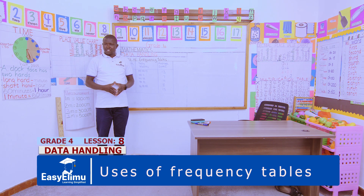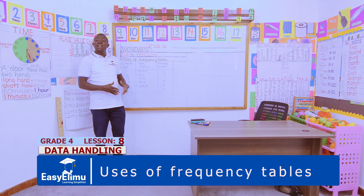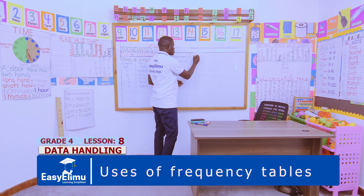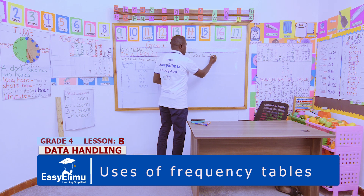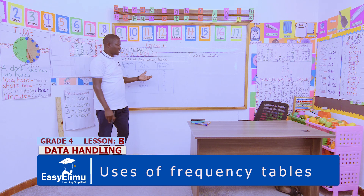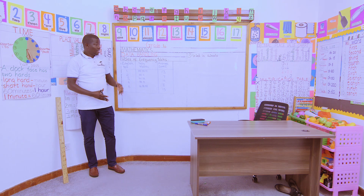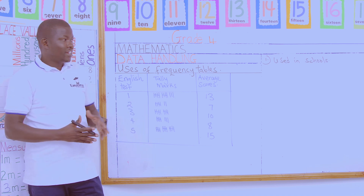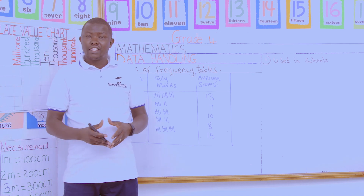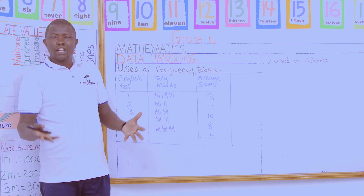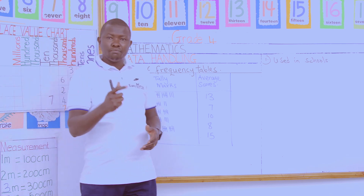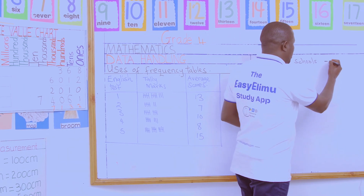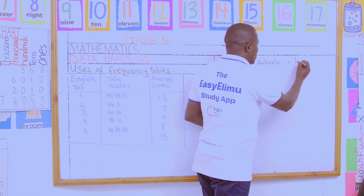As we learn about the uses, remember: frequency tables are very much used in schools. How are they used in schools? For example, when we want to tabulate results the way we have done here in English tests, we use frequency tables to help us tabulate averages or scores — between different tests of the same subject or different subjects.